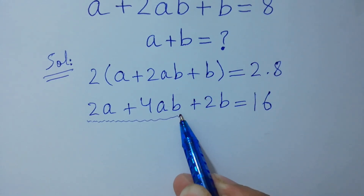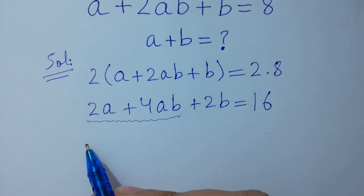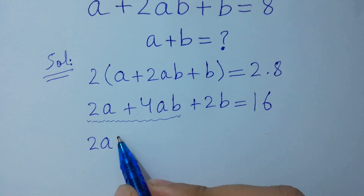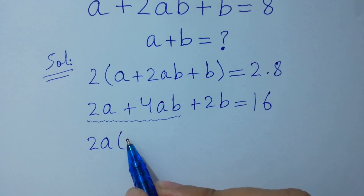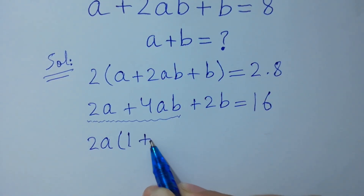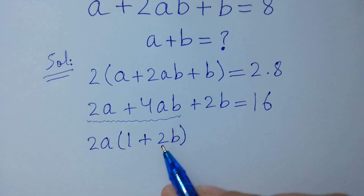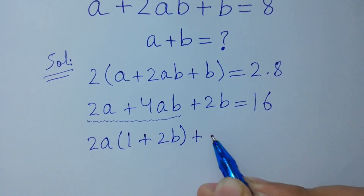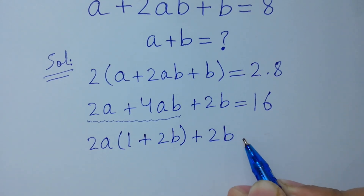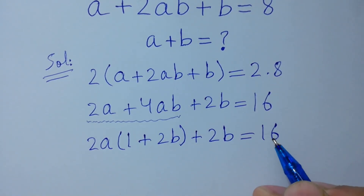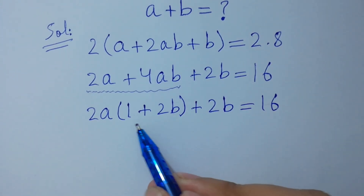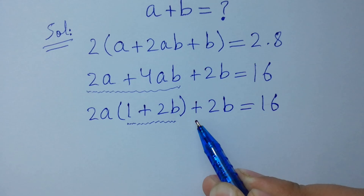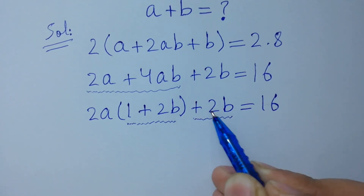We can factor 2√a: we have 2√a times (1 plus 2√b), because 2 times 2 is 4, plus 2√b, all equal to 16. Here you can see the term (1 plus 2√b) appearing.